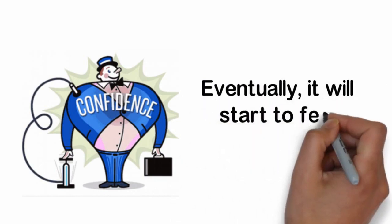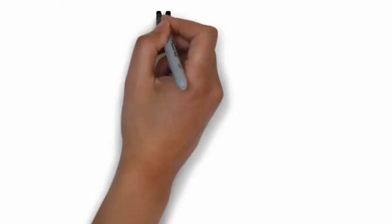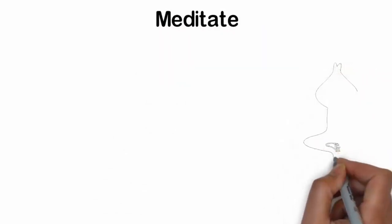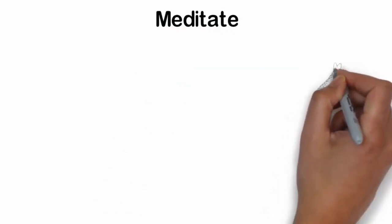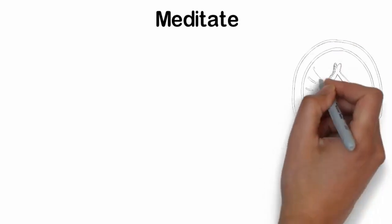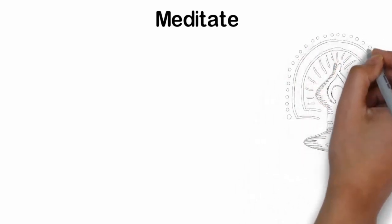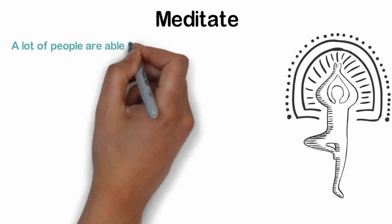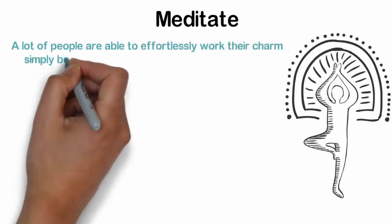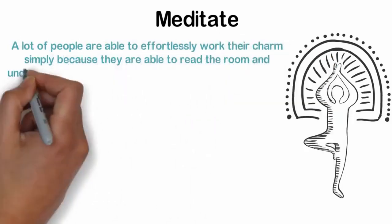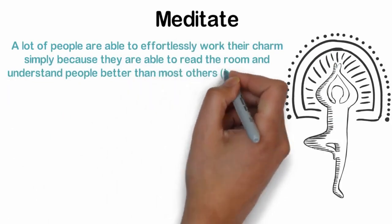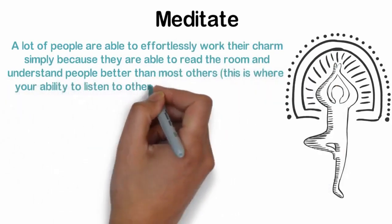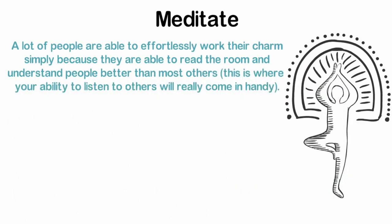Meditate. Now this may sound like one of those pointless hippy-dippy methods that make no sense, but we promise you that we have a point, so stick with us and you will see why. Meditation can make a pretty significant difference to your charming abilities. A lot of people are able to effortlessly work their charm simply because they are able to read the room and understand people better than most others. This is where your ability to listen to others will really come in handy.